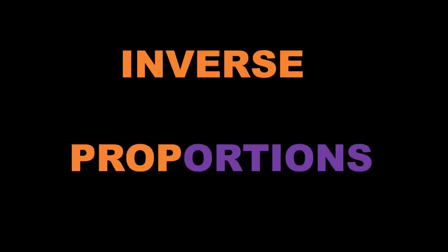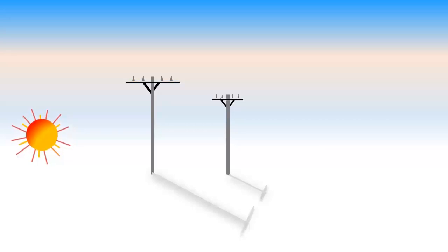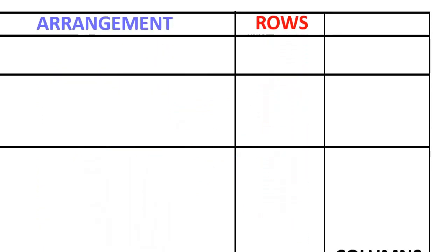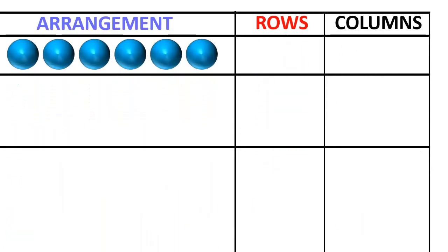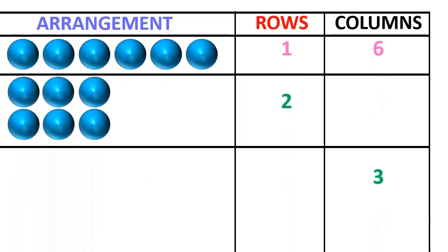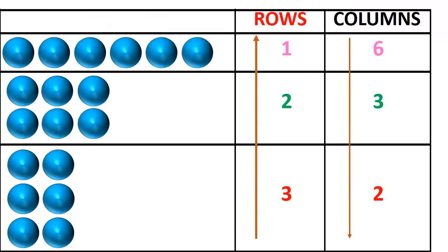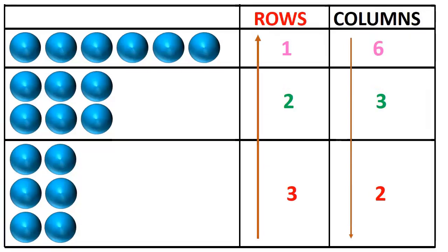Inverse Proportions. In the forenoon, as the time increases, shadow of the electric pole decreases. Tony has six balls. He arranges them in three different ways. To place them in one row, he needs six columns. To place them in two rows, he needs three columns. To place them in three rows, he needs two columns. As the number of rows increases, the number of columns decreases. Here, the number of rows and the number of columns are in inverse proportion.